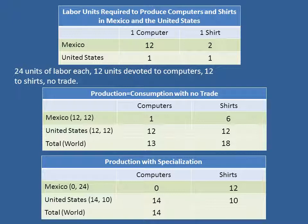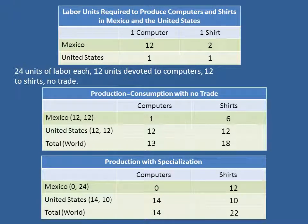Now, here's a key — look at the totals. We now have 14 computers and 22 shirts. Total world production has gone up. We have more computers with specialization than we did when the two countries were not specialized and did not trade. Before, we had 13 and 18; now we've got 14 and 22 — a big increase. Notice, however, that Mexico doesn't have any computers, and the United States has fewer shirts than before. So, is there a way to make both countries better off? Well, clearly, since total production has gone up, there is.